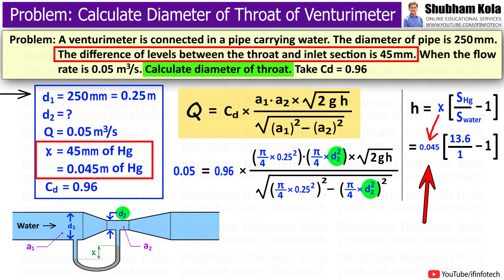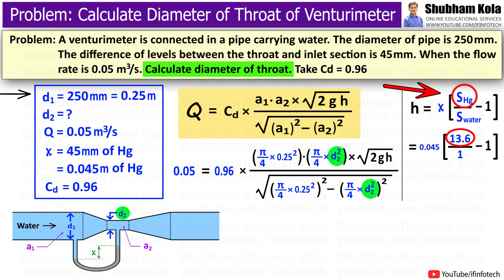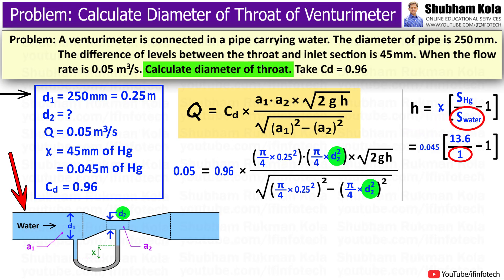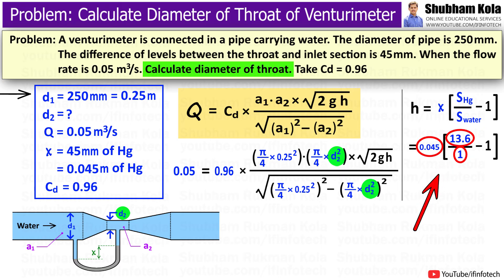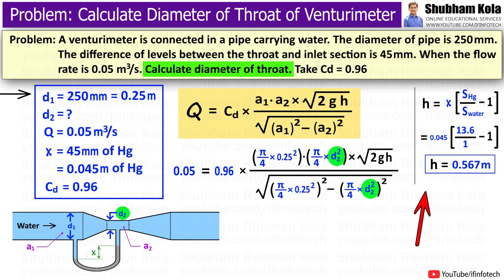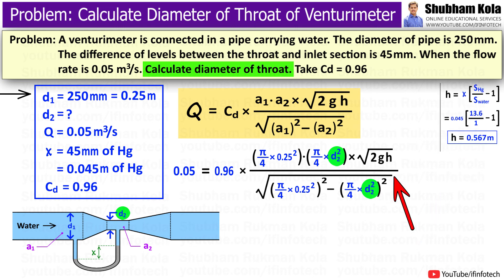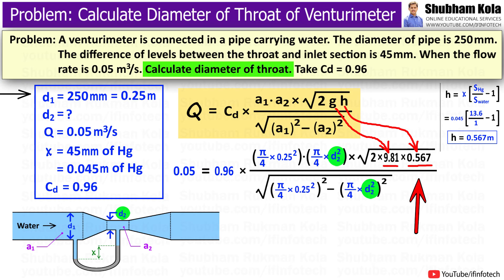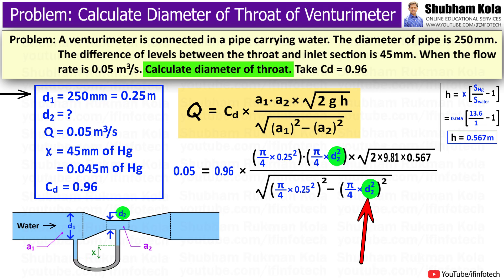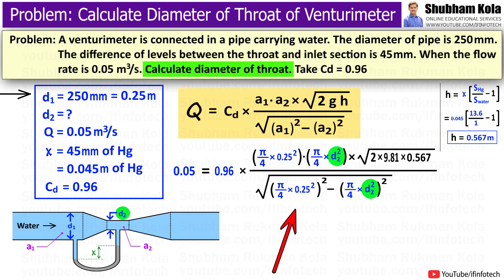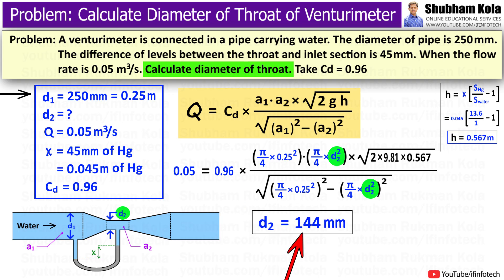Here x is 0.045 m, and the heavier fluid is mercury with specific gravity 13.6. The lighter fluid is water with specific gravity 1. Using these values, we calculate h. Then we substitute the calculated value of h into the discharge formula. With all values now known, we solve for d2, and obtain the throat diameter of the Venturimeter.